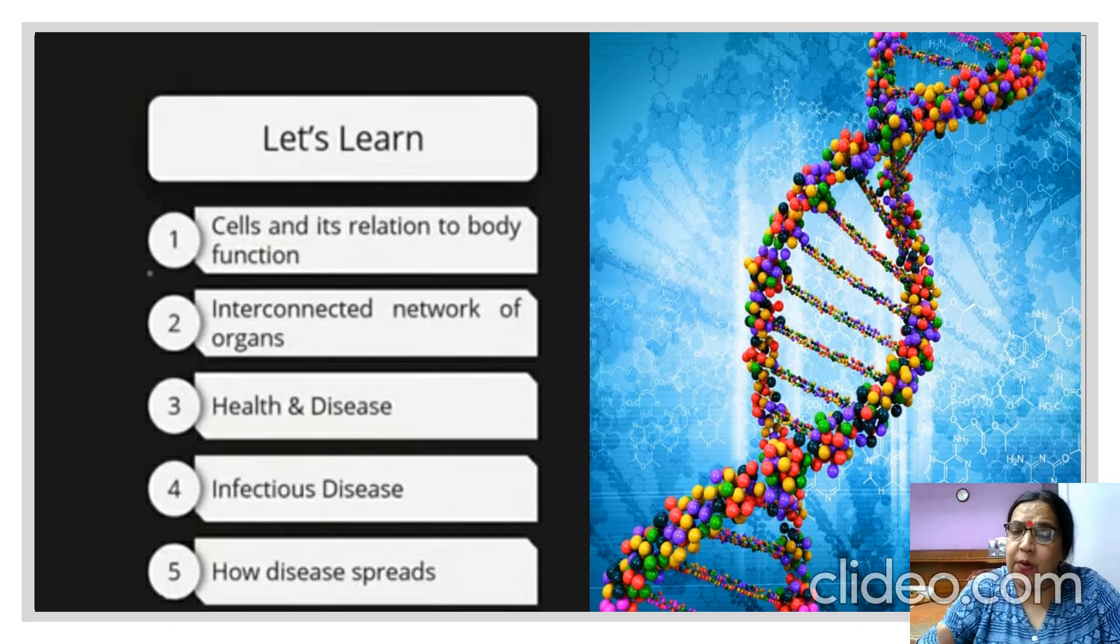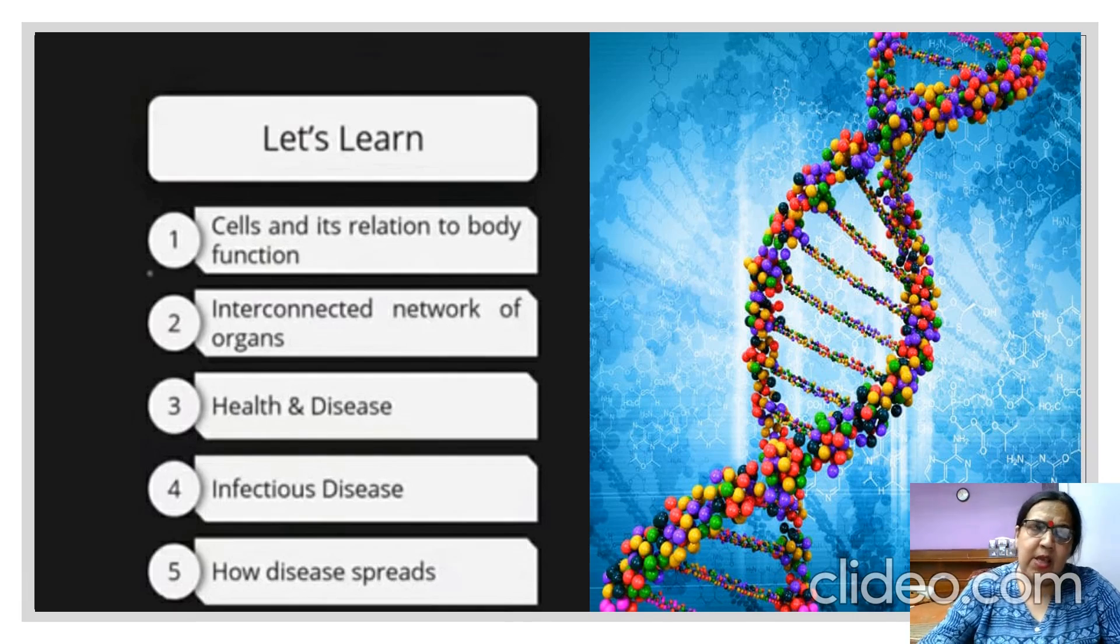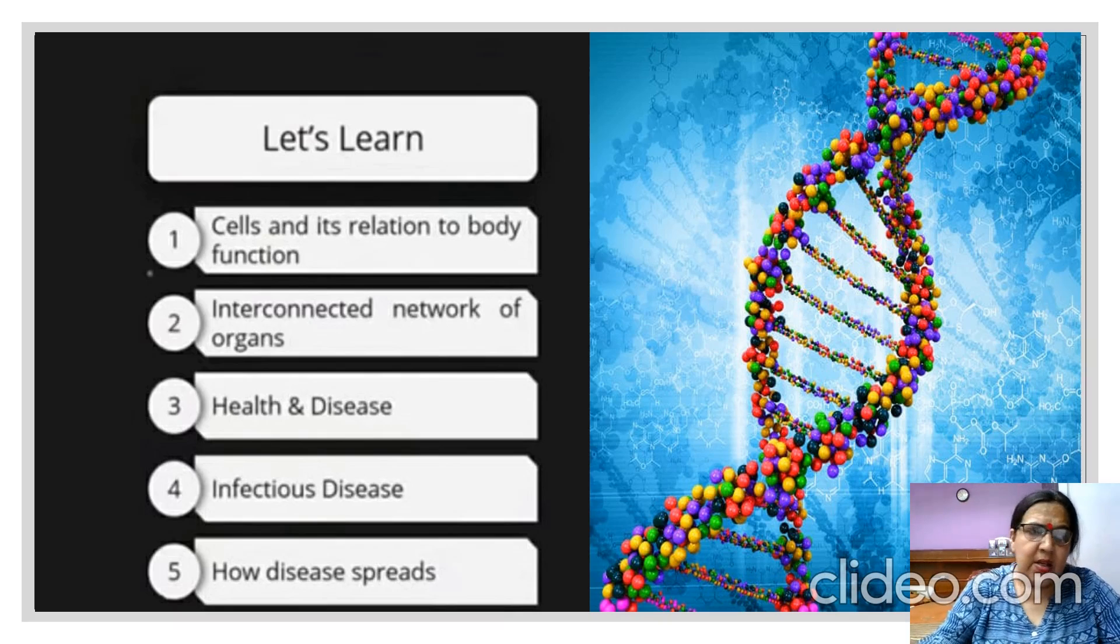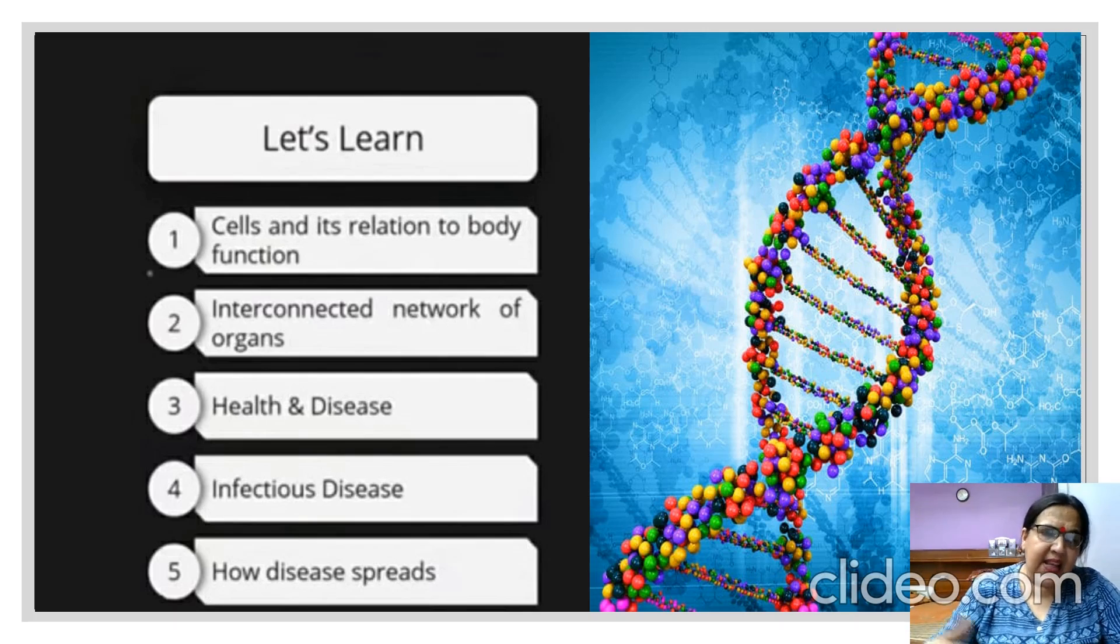For example, diabetes, thyroid - does it spread from person to person? No, it does not spread. Thyroid is caused due to deficiency of iodine. Similarly, diabetes - why is a person suffering from diabetes? When his sugar level increases, insulin is not produced. Similarly, you must have heard about many genetic diseases which are being transferred from parents to the offspring.